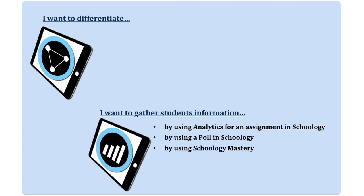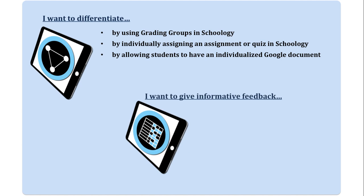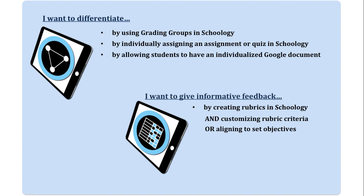If teachers want to differentiate for their students, they can do this by creating grading groups in Schoology, by individually assigning an assignment or quiz to a specific student or group of students in Schoology, or by allowing students to have an individualized Google document built especially for them. If you want to give informative feedback to students, you can do this by creating a rubric, customizing that rubric, or aligning to set objectives and standards.